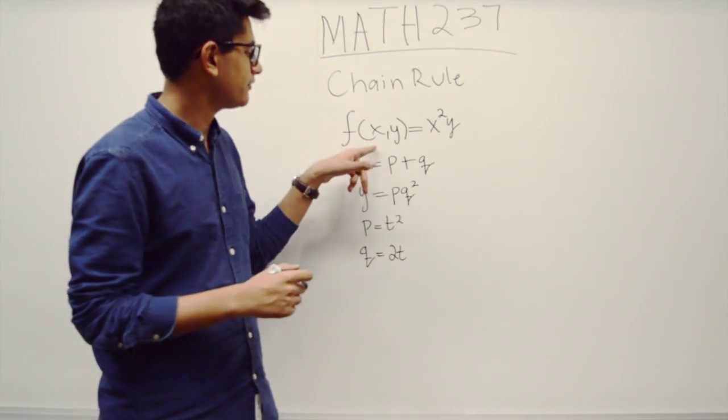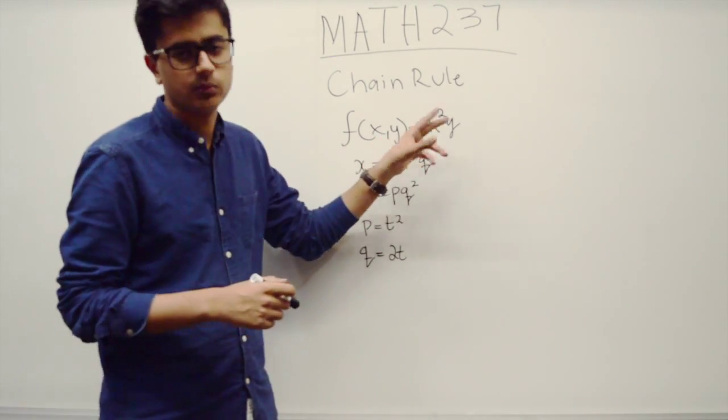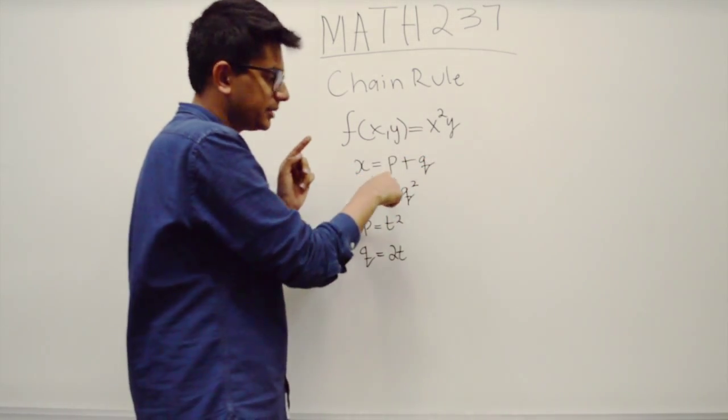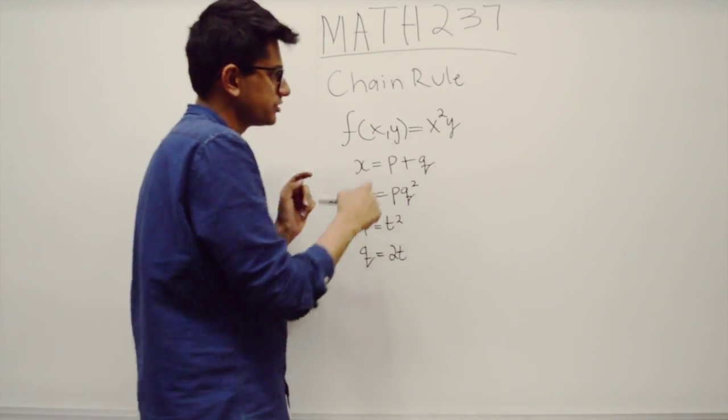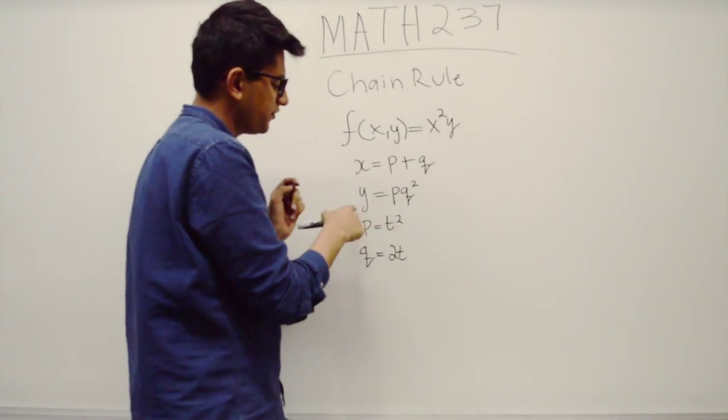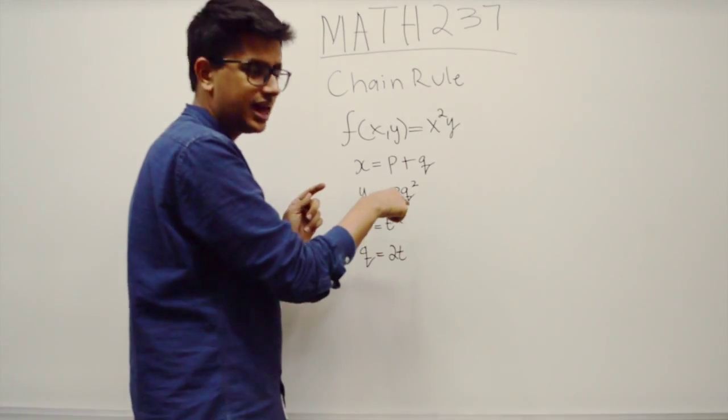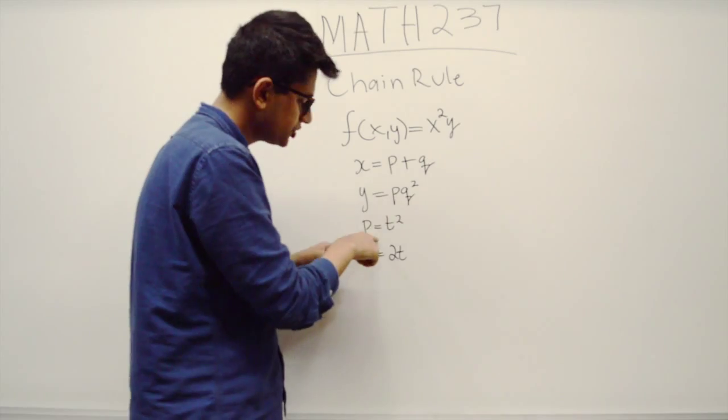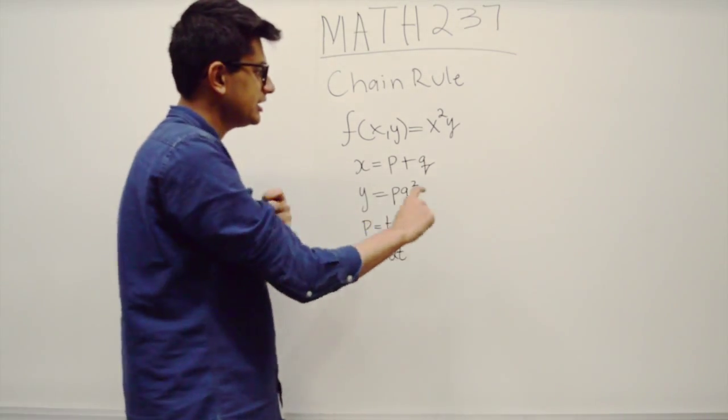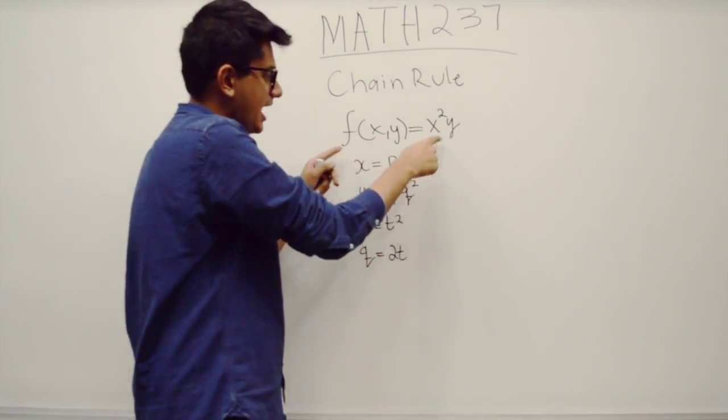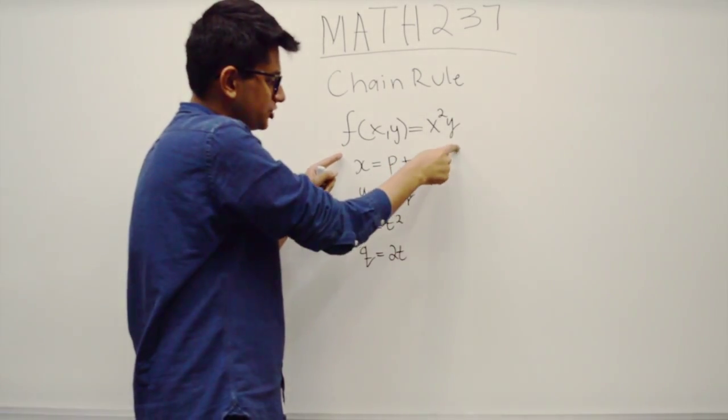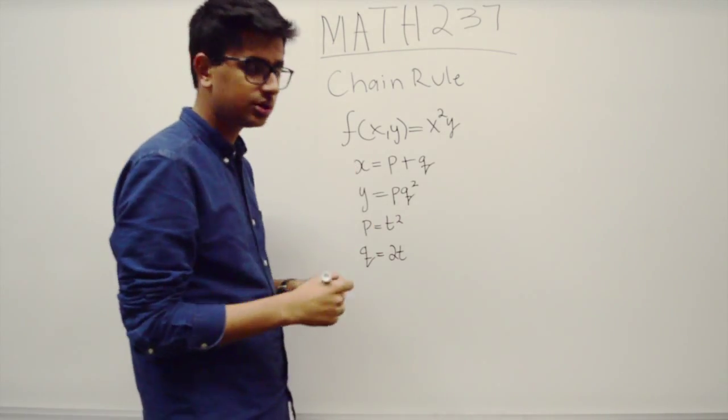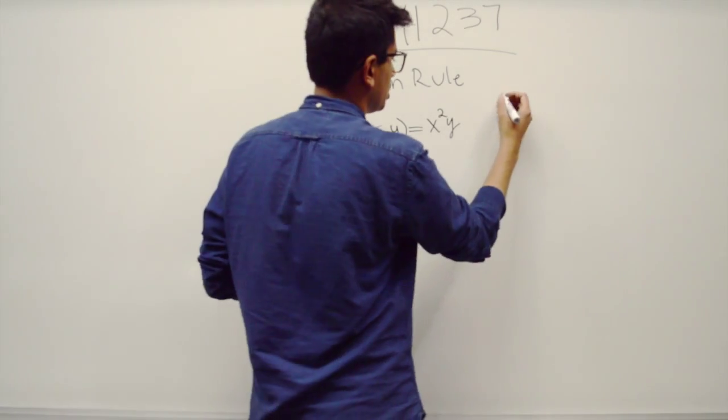Let's say you're given a function f(x,y) = x²y. In the composition, x is a function of p and q, as in x = p + q, and so is y - y is also a function of p and q as pq². Then p and q are again functions of another variable which is t. So f is a function of x and y, x and y are functions of p and q, and p and q are functions of t.